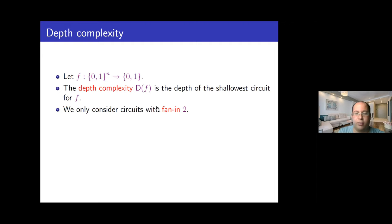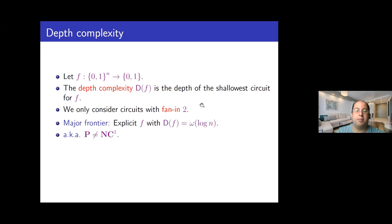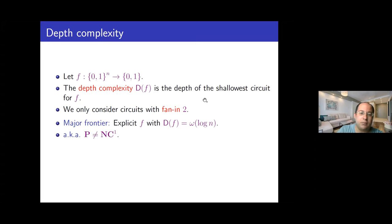For the purpose of this talk, we only consider circuits of fan-in two. This means that the minimal depth for computing any function that depends on n variables is log n, because otherwise you just can't read all the possible input variables. The major frontier in this question is to come up with a function that requires much more than log n depth — that is, a function whose depth complexity is small omega of log n, which is also known as the P versus NC1 question. This is maybe one of the most important questions of circuit complexity.